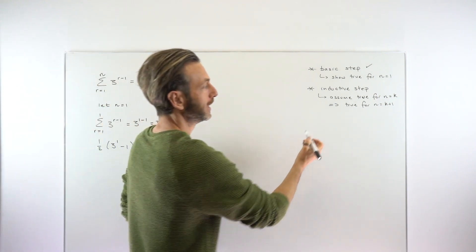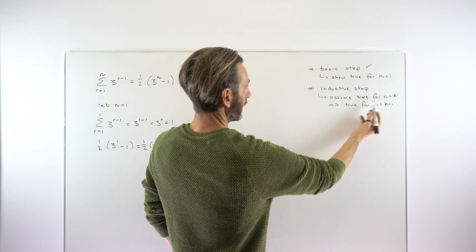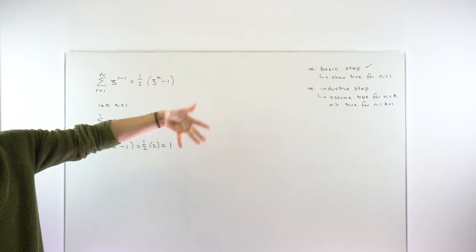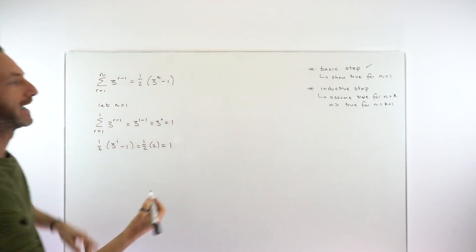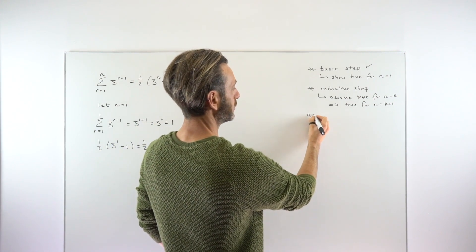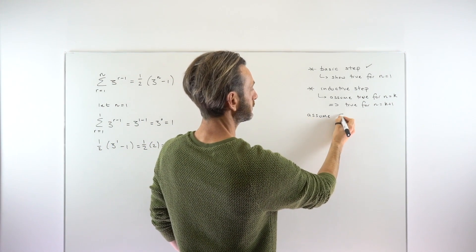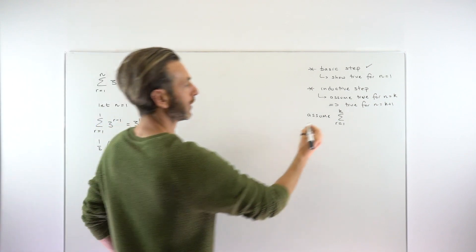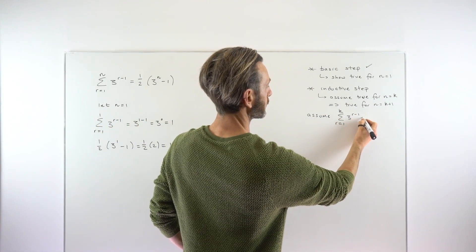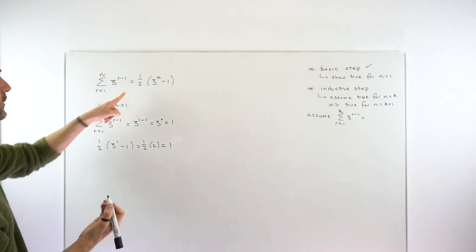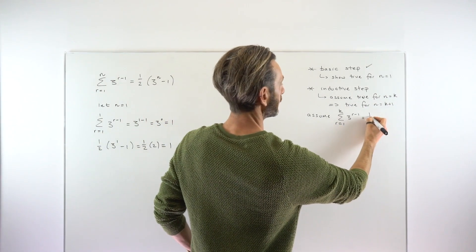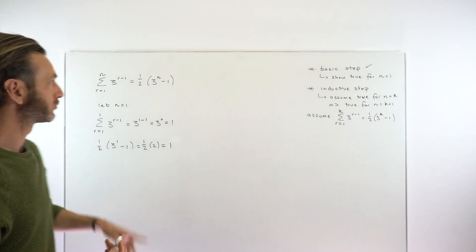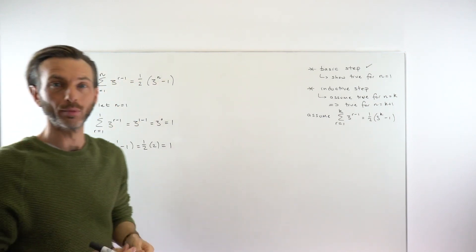The more challenging part is the inductive step. It's worth writing out what our assumption actually is. We're assuming this is true for the general kth case — in other words, we're allowed to assume that the sum from r equals 1 to k of 3 to the power of r minus 1 equals one half times (3 to the power of k minus 1).